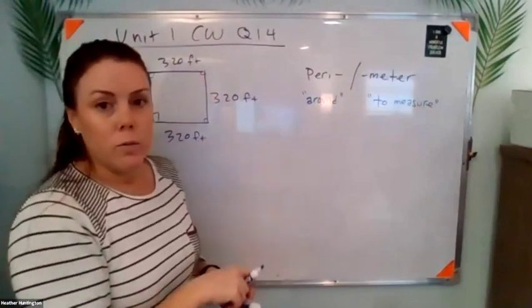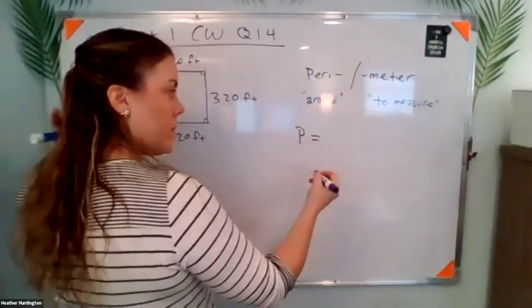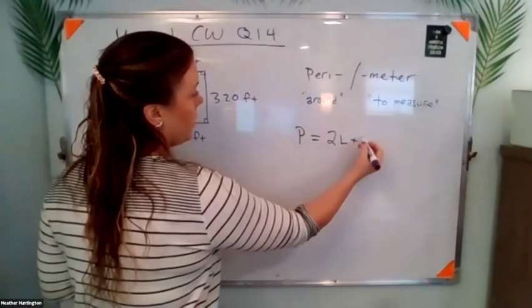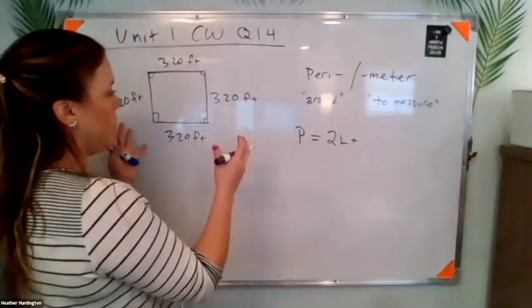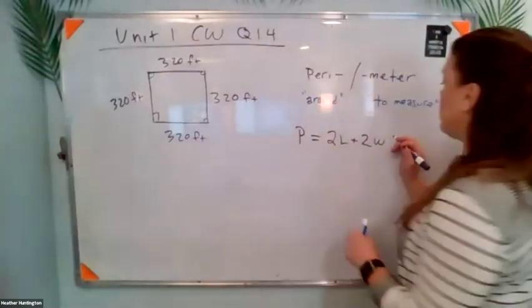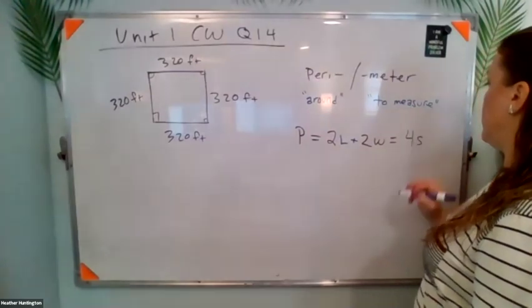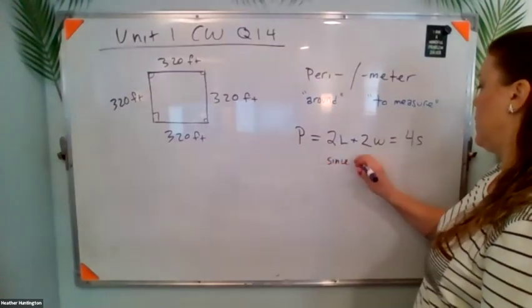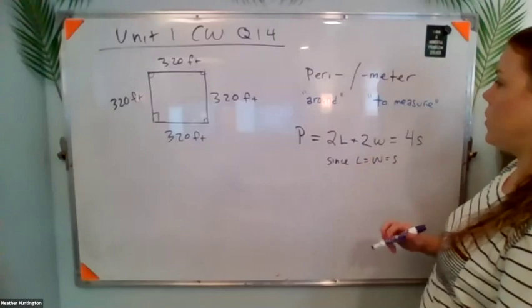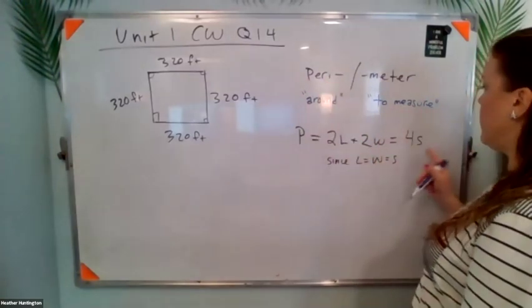Okay, now think about any formulas that you know about perimeter. So I know that for a rectangular object, it's 2L plus 2W. A square is a type of rectangle. So for a square, it's going to be four times the side, right? If you do side plus side plus side plus side, you get four side.